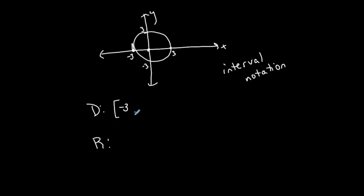Interval notation goes from one value to another, with everything in between included. Starting at the smallest x — negative 3 — and because I'm including that point, I use a bracket. A bracket in interval notation implies you're including that value. Ending at positive 3, which is also included, so another bracket. My domain is [-3, 3].